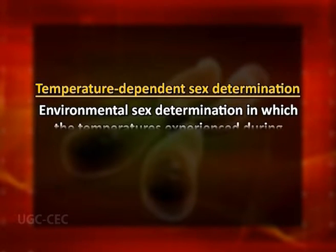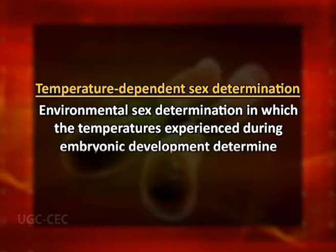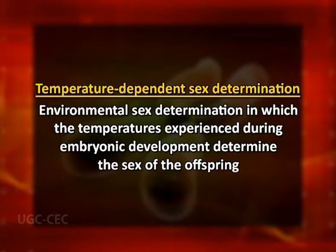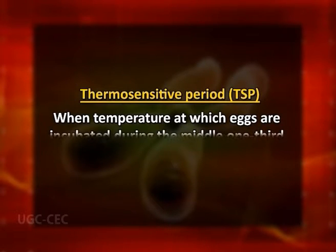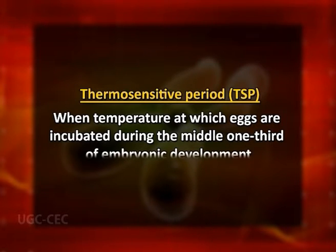Temperature-dependent sex determination is a type of environmental sex determination in which the temperature experienced during embryonic development determines the sex of the offspring. It is most prevalent and common among amniotic vertebrates classified under the reptile class. Temperature-dependent sex determination was also thought to occur in some megapodes. However, their offspring sex ratios appear to result from temperature-dependent embryo mortality rather than temperature-dependent sex determination. The critical period of incubation is known as the thermosensitive period.